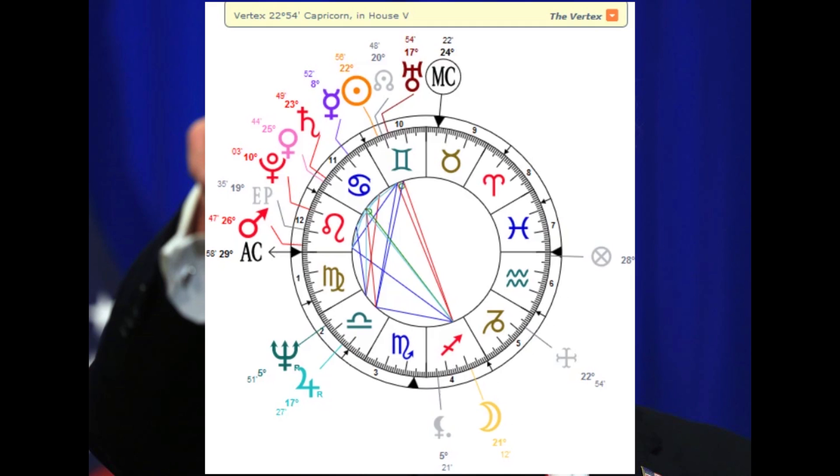He's not only close to winning, he won the Republican primary. Why is that? That is the power of the North node.